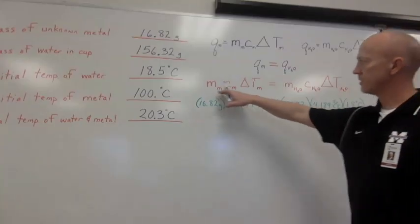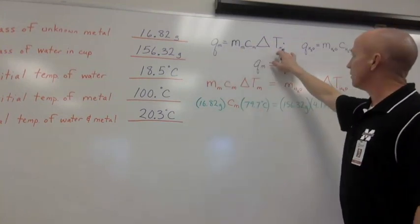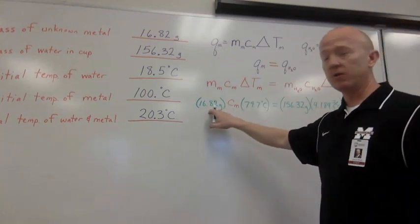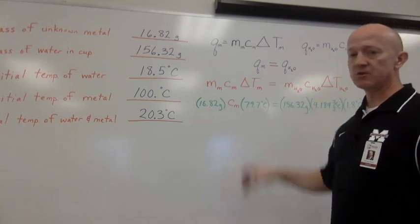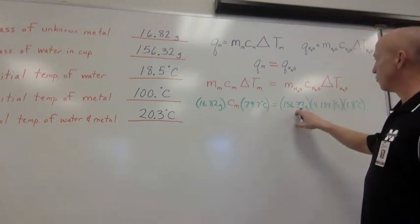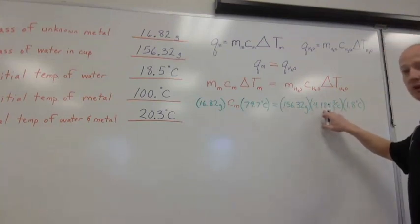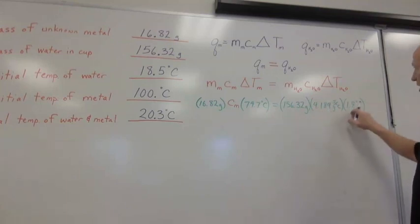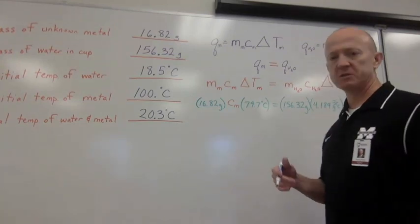Here we go. So I've set these two equations equal to each other. The equation for the heat of the metal, and the equation for the heat of the water. And I've simply filled in the values that I know. The mass of the metal was 16.82 grams. The change in temperature was 79.7 degrees Celsius. The mass of the water is 156.32 grams. The specific heat of water, we know. 4.184 joules per gram degree Celsius. And the change in temperature of the water was 1.8 degrees Celsius. So now, let's solve for the specific heat of the metal.